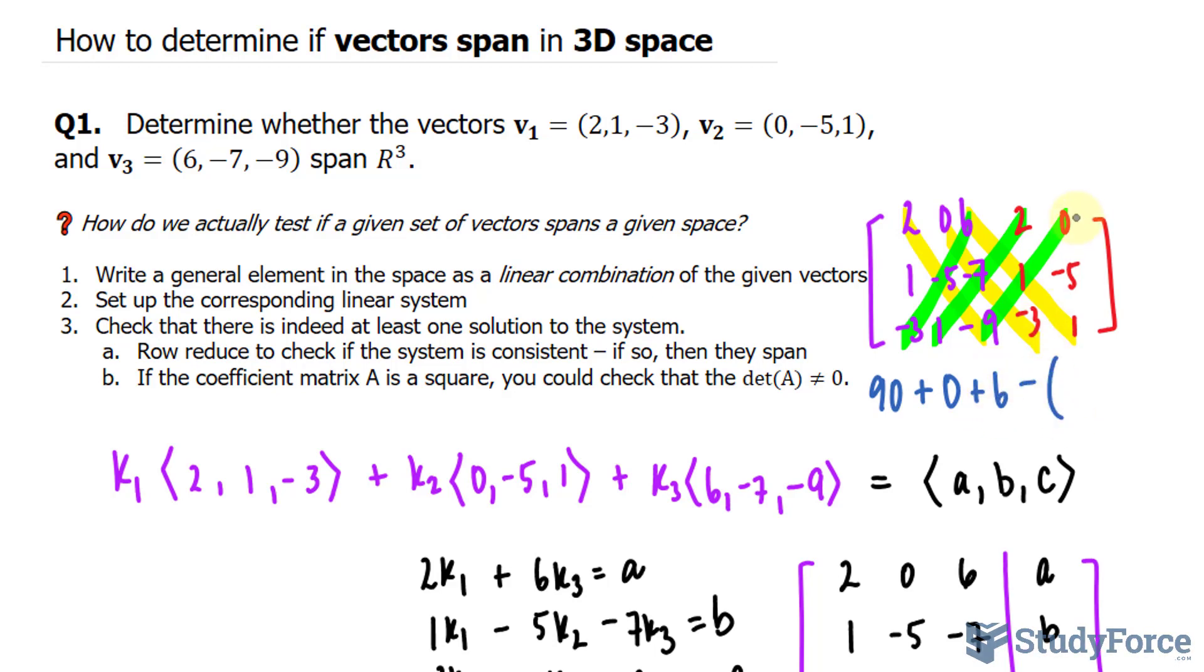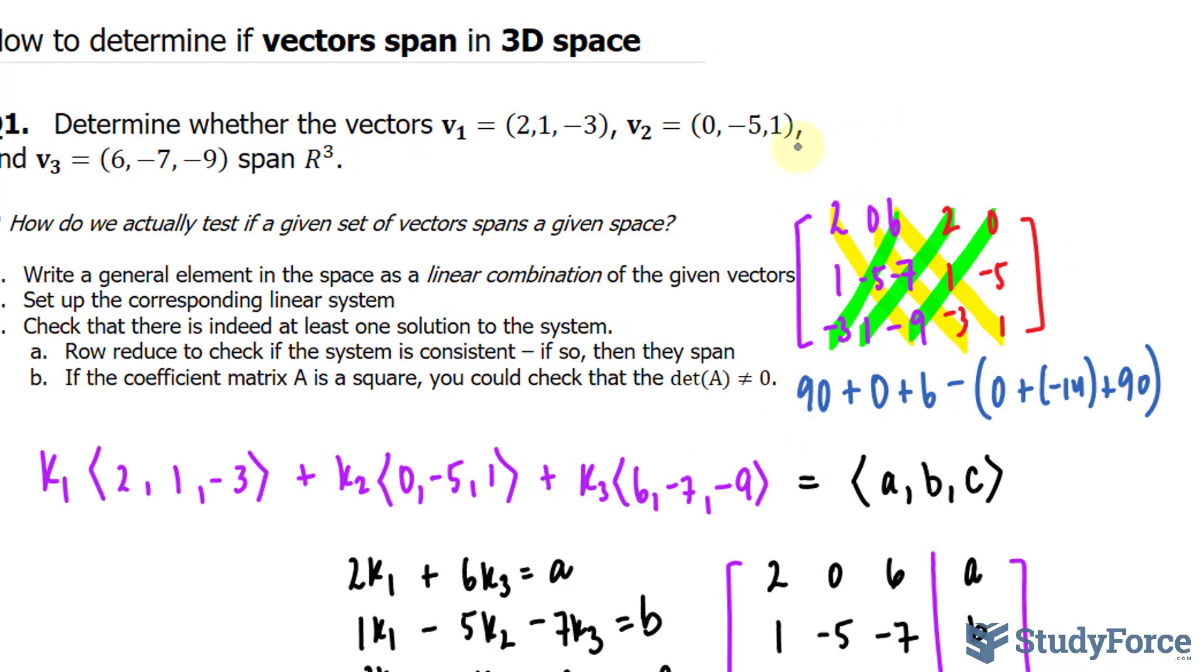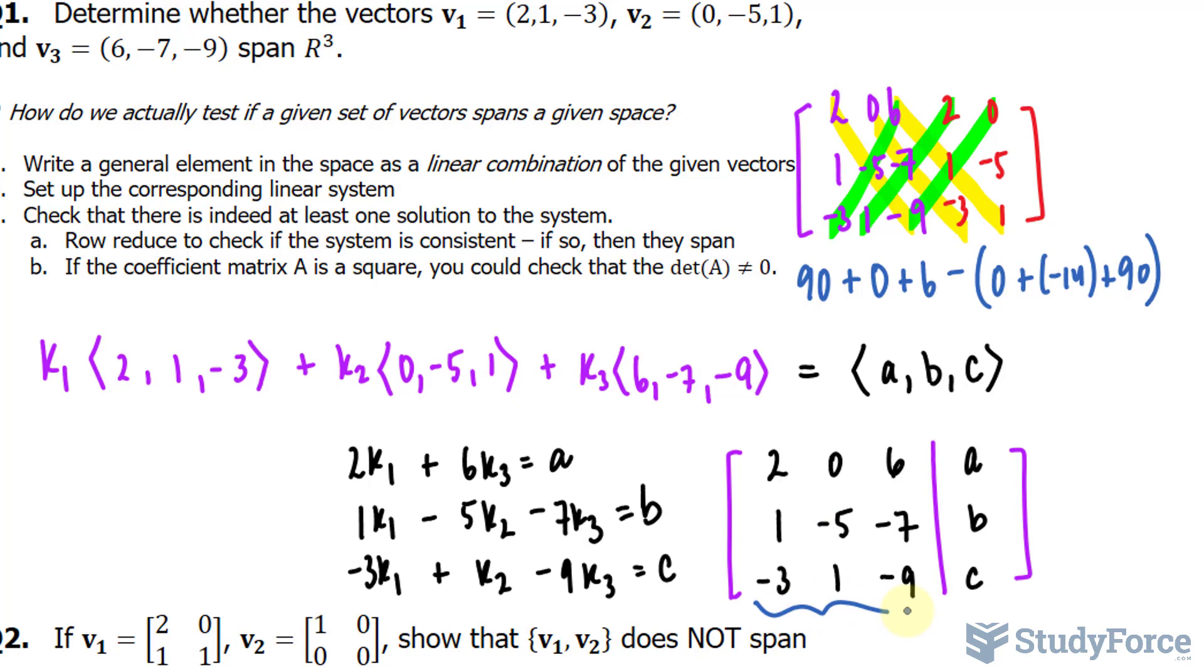the product of these. So the determinant of this matrix, which we can call A, so I'll call this A, the determinant of that is equal to 20. And since 20 does not equal to 0, we can conclude that this system is consistent for all A, B, and C, and therefore it spans.